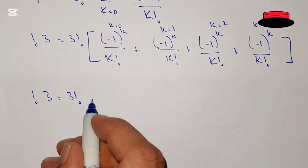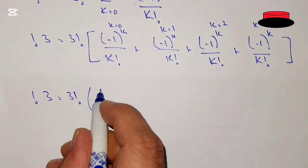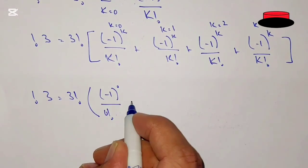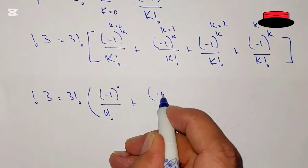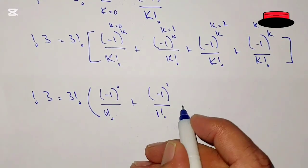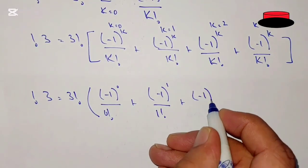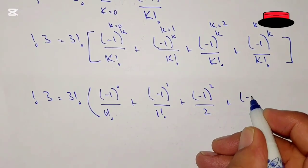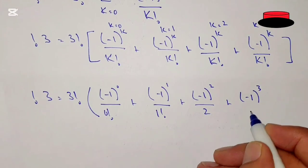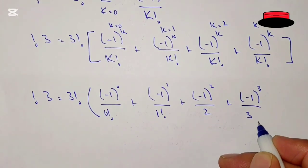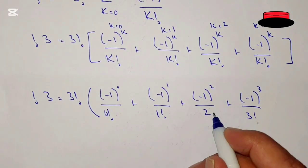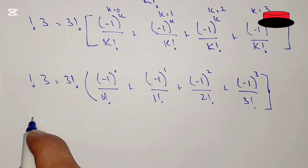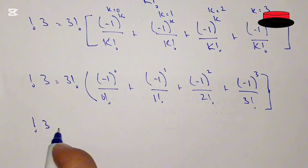So sub factorial 3 equals 3 factorial times: minus 1 to the power 0 divided by 0 factorial, plus minus 1 to the power 1 divided by 1 factorial, plus minus 1 to the power 2 divided by 2 factorial, plus minus 1 to the power 3 divided by 3 factorial.